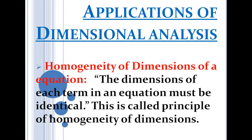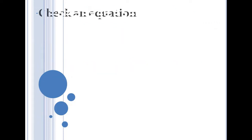In a physical equation, each term has the same dimension — that means the dimensions of each term are identical in any physical relation. This is called the homogeneity of dimensions. The dimensions on the right side must be the same as dimensions on the left side for the given physical relation to be dimensionally correct. Each term in a physical equation must have the same dimension.